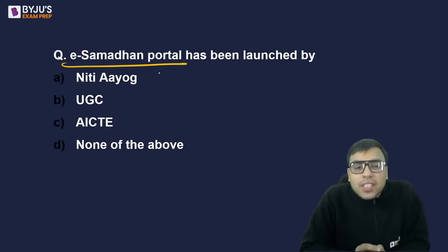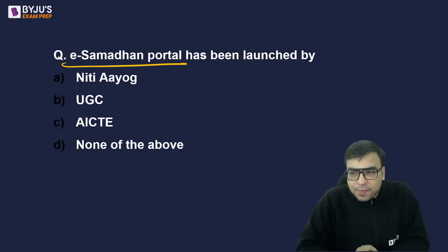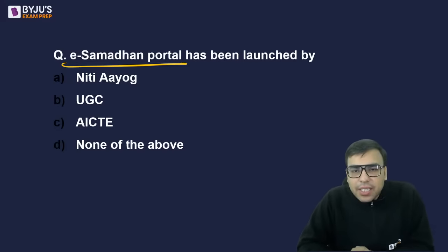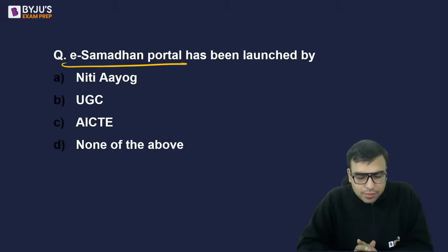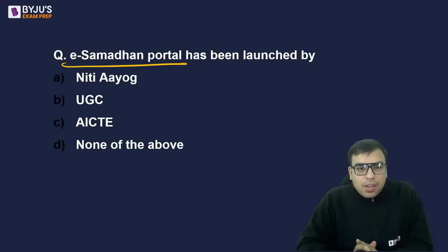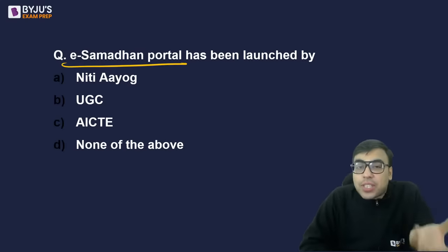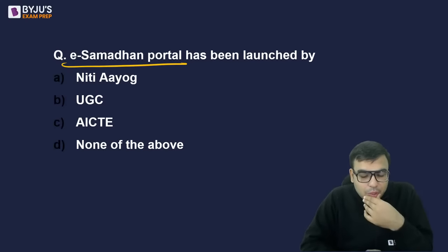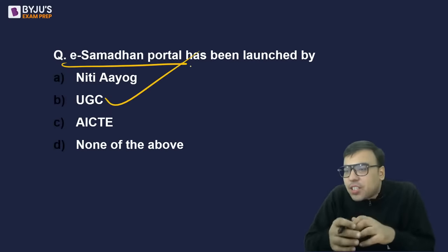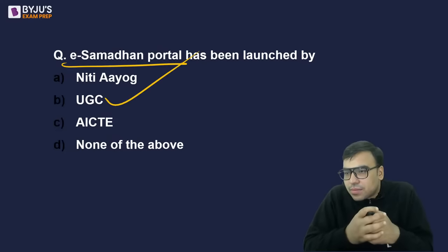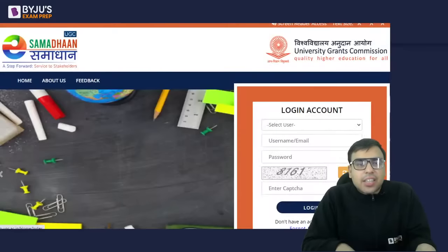E-Samadhan Portal was launched by which organization? Options: NITI Aayog, UGC, AICTE, or None of the Above. Portals are asked in exams — previous year questions have asked which organization launched which portal. The right answer is B — UGC (University Grants Commission). The E-Samadhan portal is a grievance redressal platform.